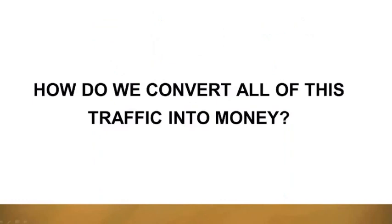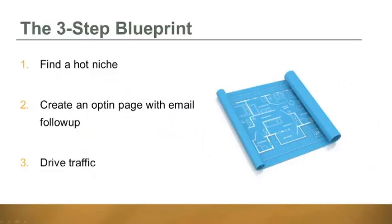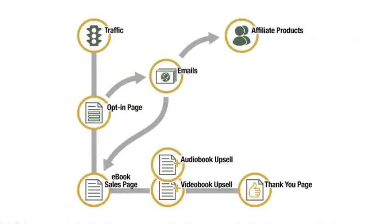How do we convert all this traffic into money? That's really the second part of the equation. Going back to my system, I use a rinse-and-repeat formula for creating hundreds of profitable niche sites — everything from betafish to organic gardening to home repair. I set these simple sites up, drive traffic to them, and make money with them. It's a three-step blueprint: find a hot niche, create an opt-in page with email follow-up, and drive traffic. I'm going to go back to a case study and show you the real thing in action — a real money-making site.